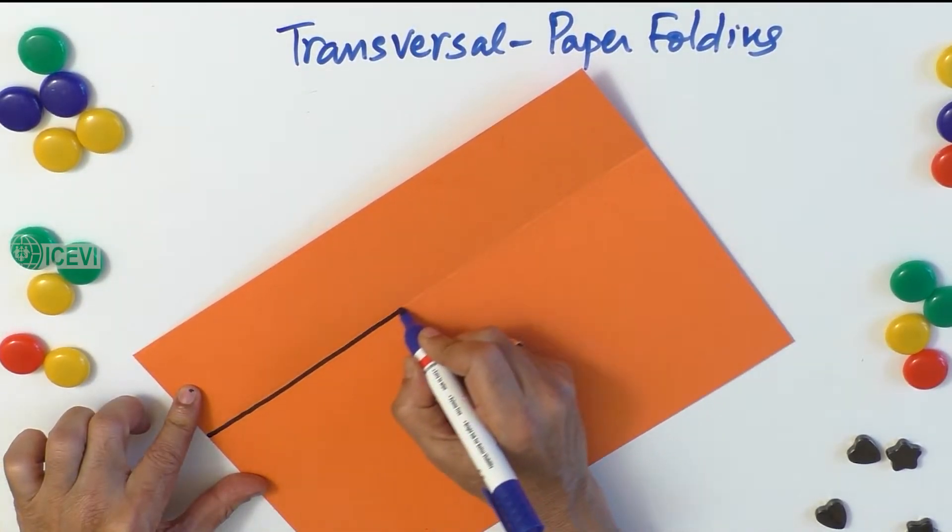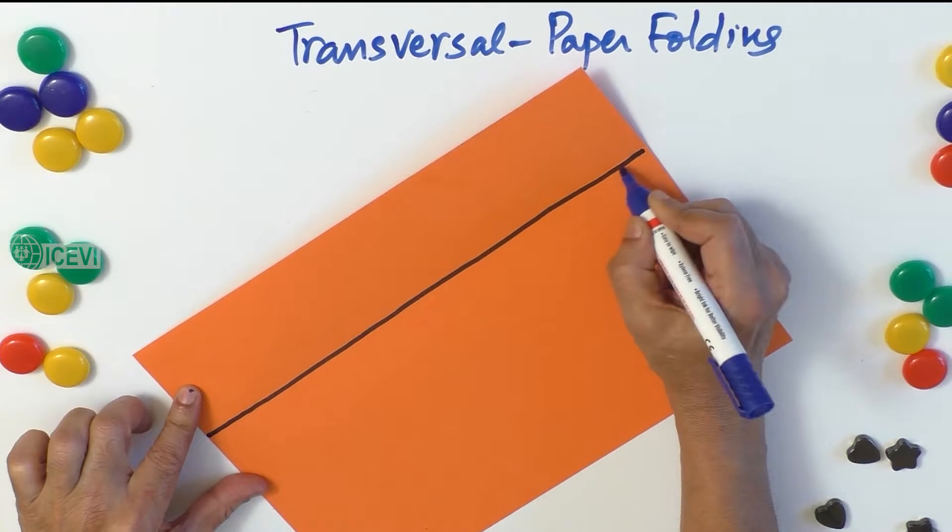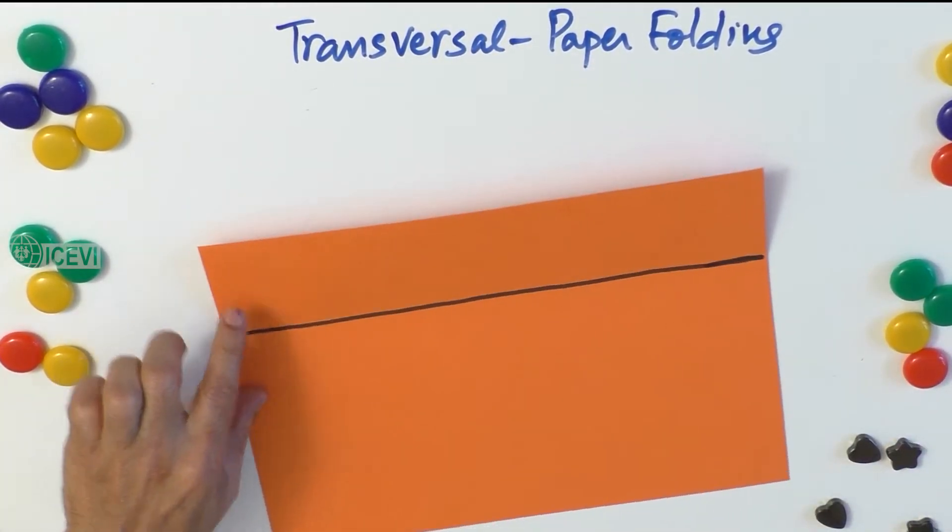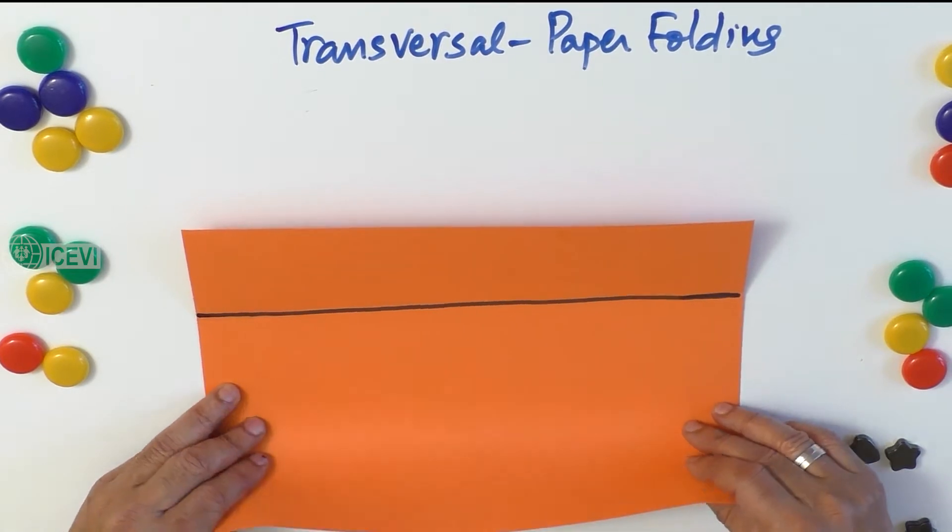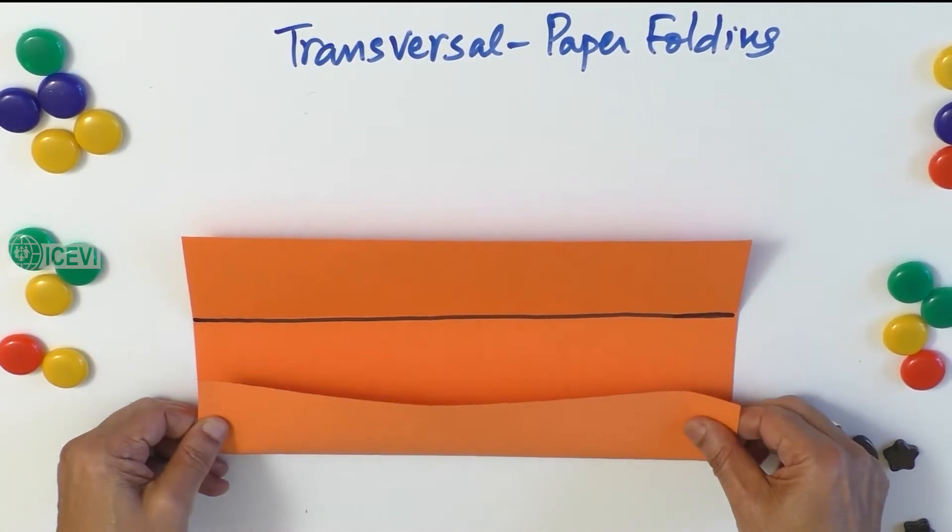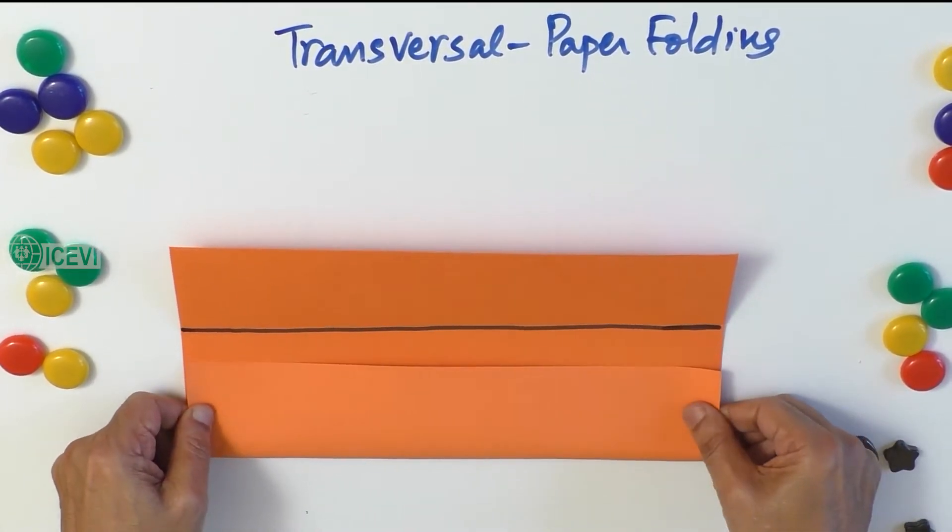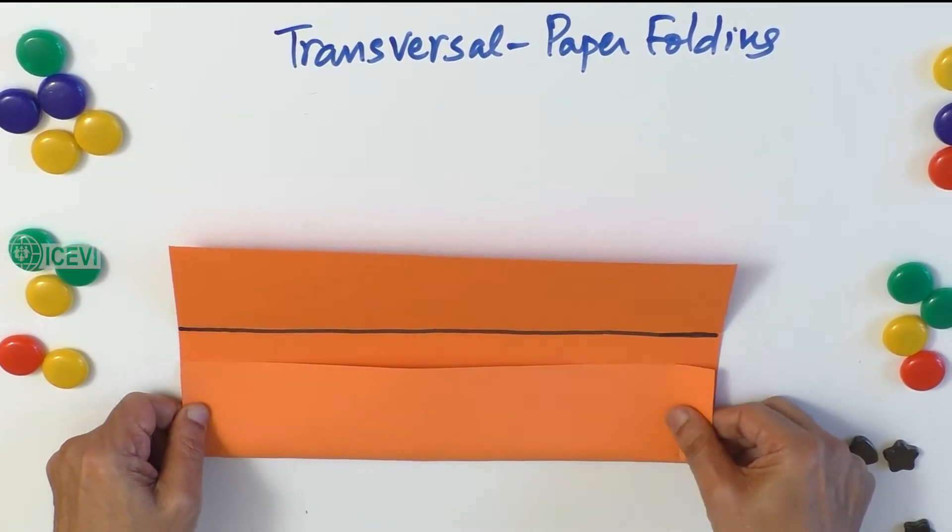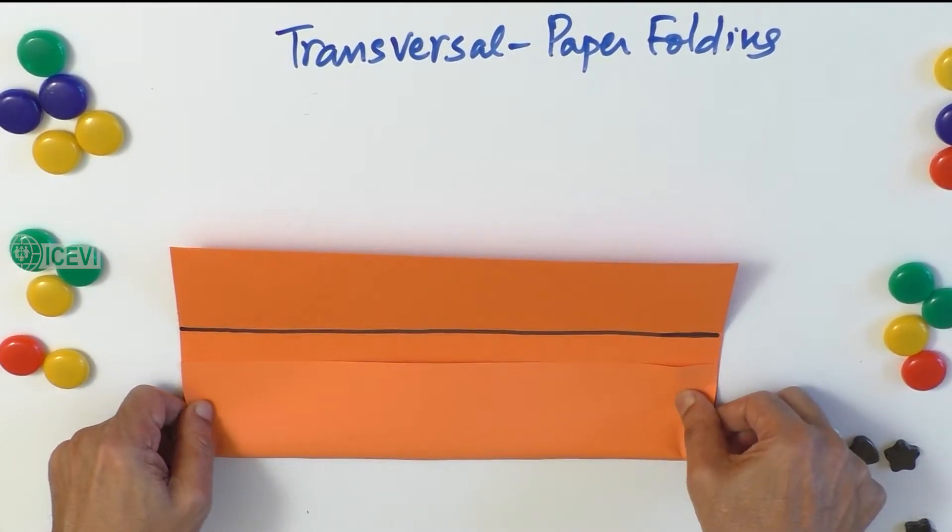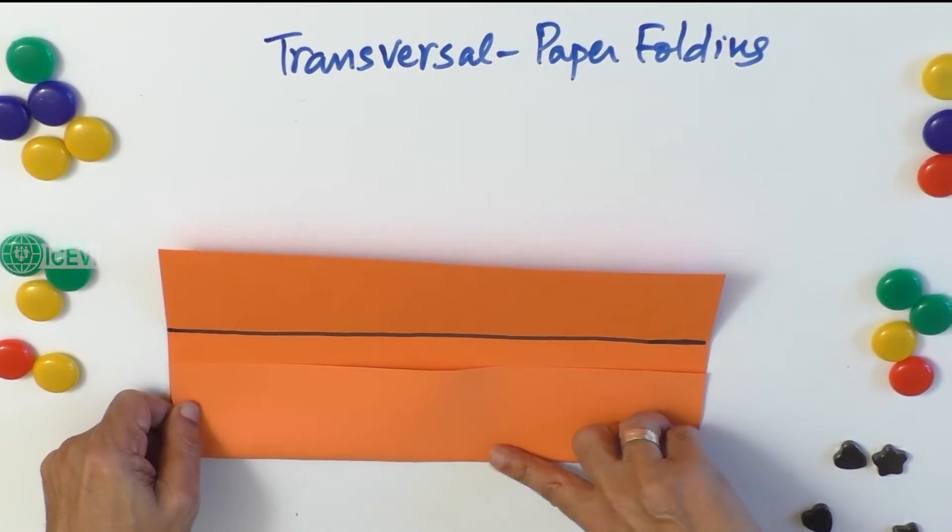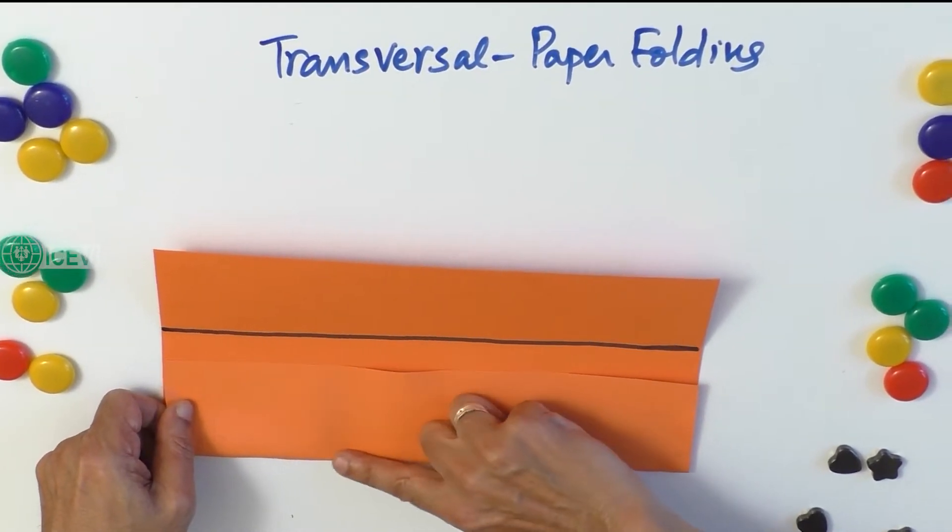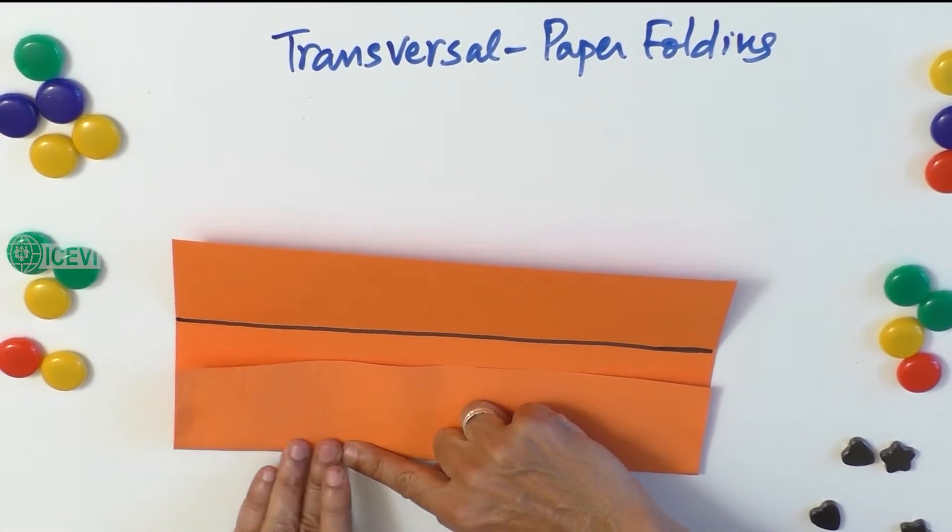Now we have to form another straight line. So what we do? Fold the paper horizontally. Take the lower base and fold it towards the upper portion of the paper and make a very strong crease.